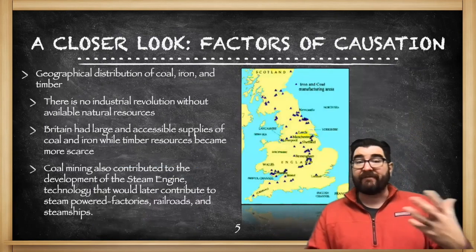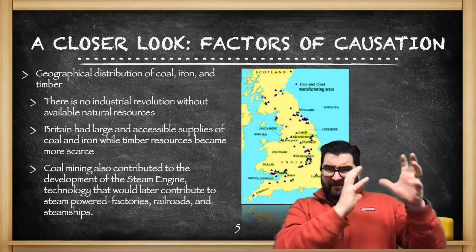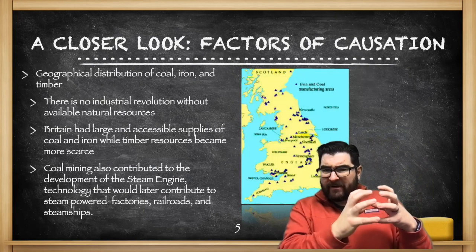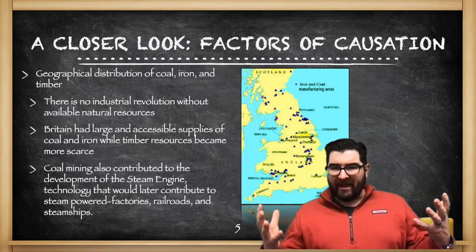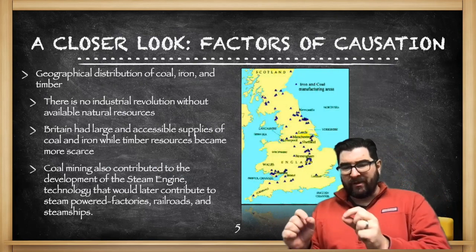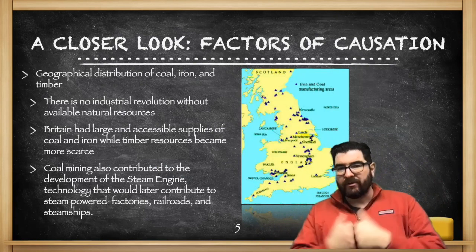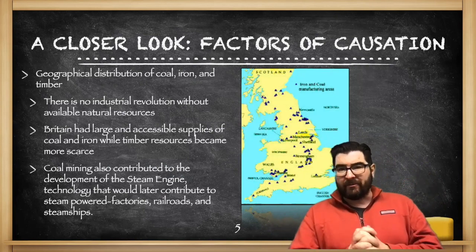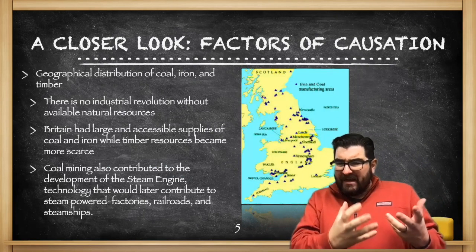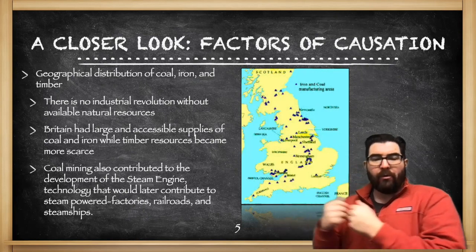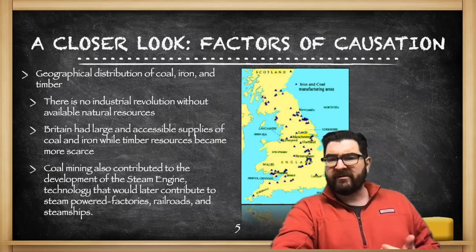With regard to the geographic distribution of coal, iron, and timber, at this point in the mid-18th century, England, as a relatively small island nation, has a depleting resource of timber. Their forest lands are not what they used to be, and that's going to push the English to a new energy source — coal. England has available and accessible supplies of coal and iron, which will each be instrumental in the Industrial Revolution. Coal mining is also going to contribute to the development of the steam engine; the very first steam engines were created to pump water out of coal mines, and that technology was later used in steam-powered factories, railroads, and steamships.